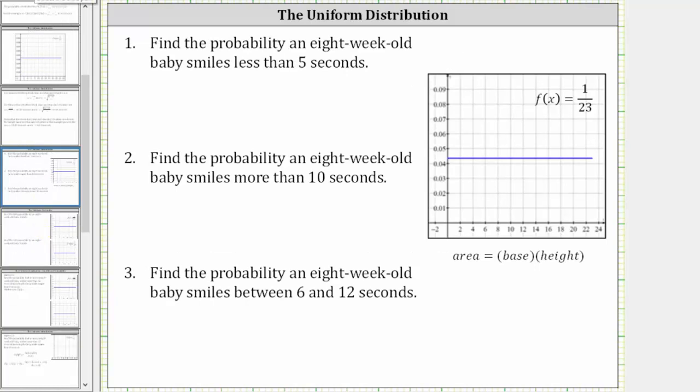The notation we use for this is the probability that x is less than five. This is equal to the area under the curve of the interval from zero to five seconds. Let's go ahead and shade this. Here we have x equals zero. Here we have x equals five.